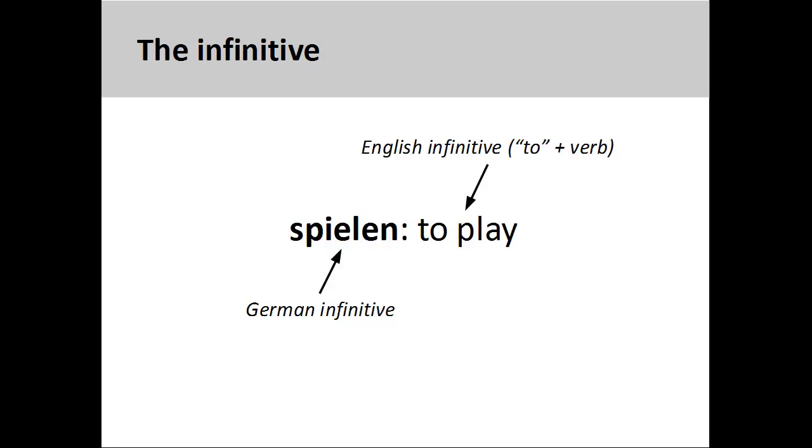To conjugate a verb in German, you begin with the infinitive form of the verb. This is the form that you will find in the dictionary. You will note that English uses 'to' with a verb to form the infinitive, but German does not do this.